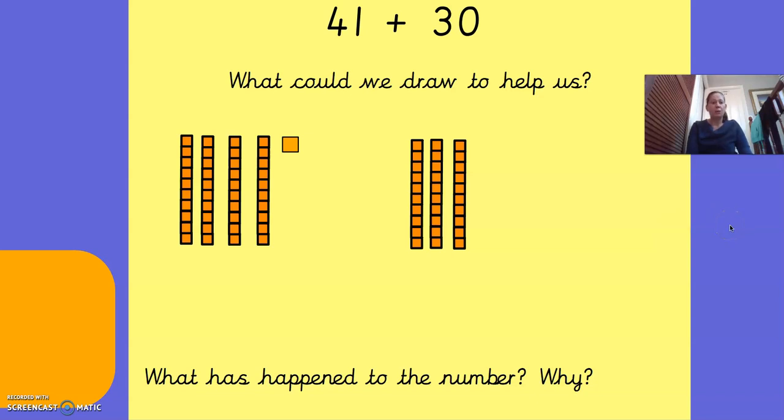Okay, if you said you could use Dienes and you've drawn Dienes, fantastic! That is one way you could work out 41 plus 30. So here we've got our 41 and then we're adding 30 more. Will the answer be the biggest number or the smallest number? Well done if you said the answer will be the biggest number. Because when we're adding two numbers together, it makes a bigger number.